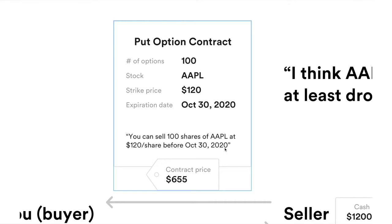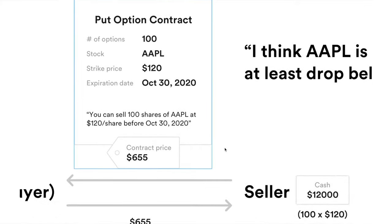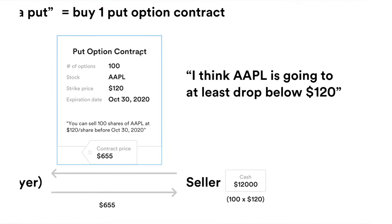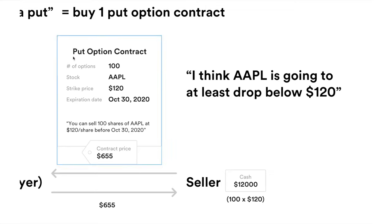To exercise the contract, you first buy 100 shares from the market and then use the put option contract to sell those 100 shares. So if you buy a put, you're essentially betting that Apple stock is going to drop below $120. If it drops to $100, you buy 100 shares at $100 and use the contract to sell those 100 shares at $120 — profiting the difference.